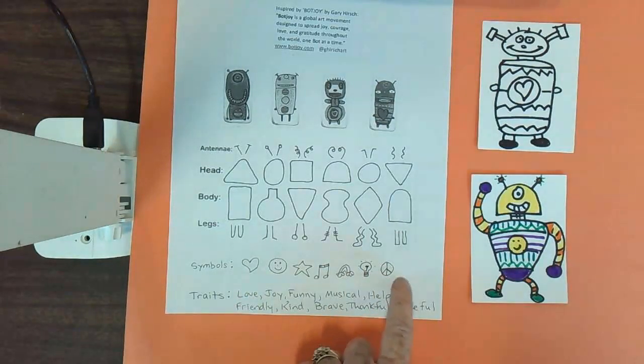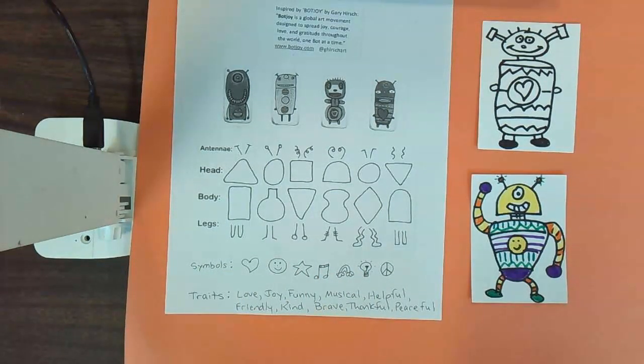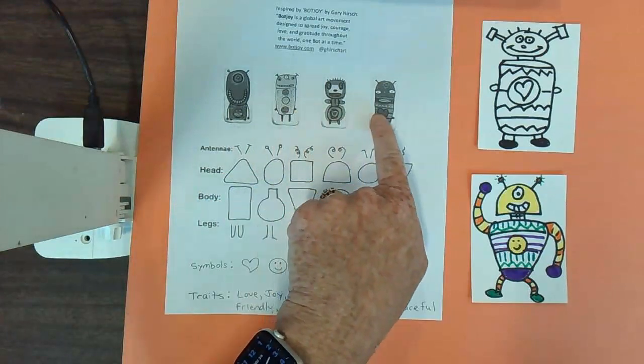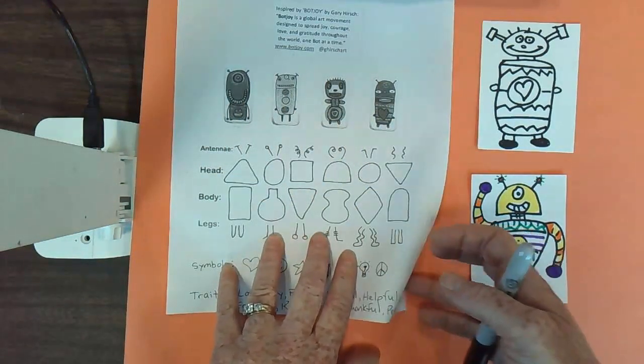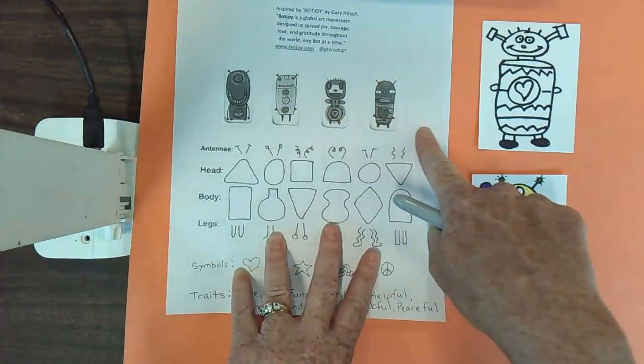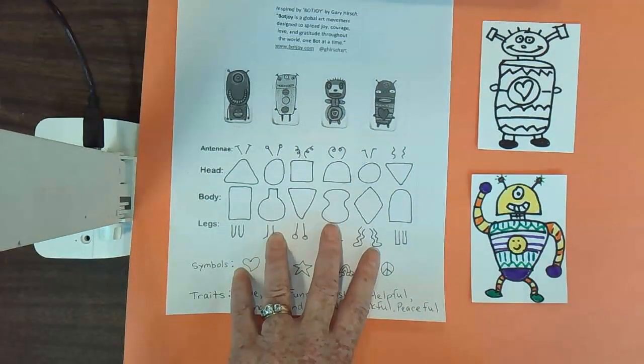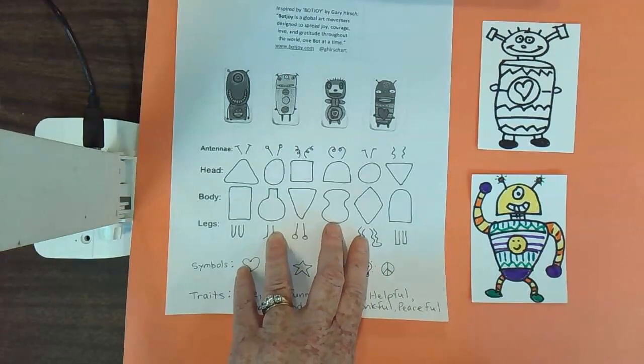Here are a few of the bots that Gary Hirsch has made just to give you some ideas. And you can see that they all are a little different. They use some basic shapes for their heads and their bodies.